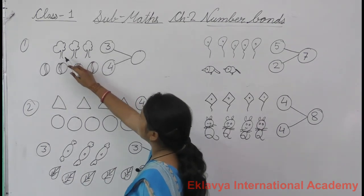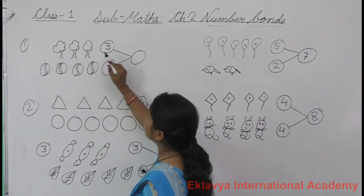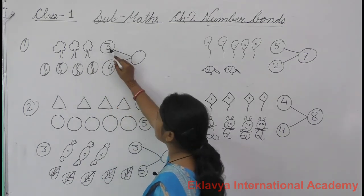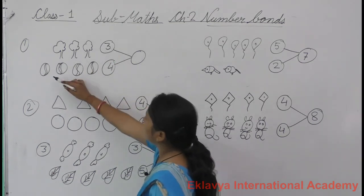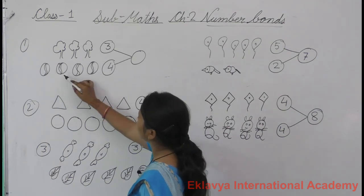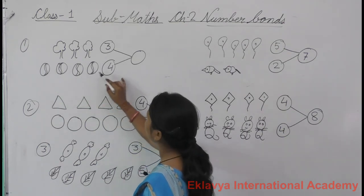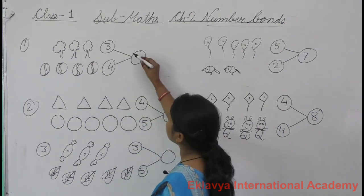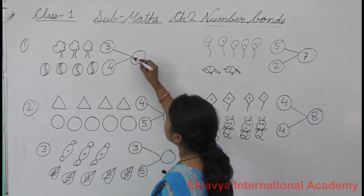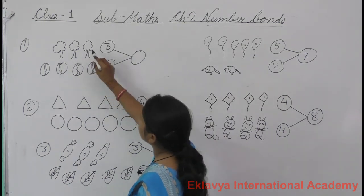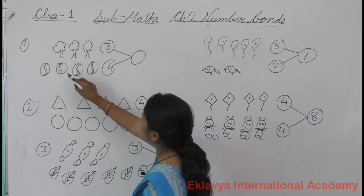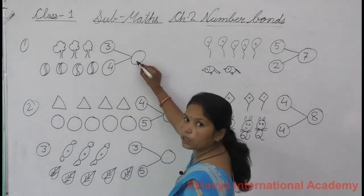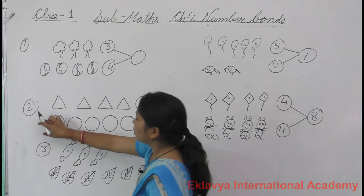This first example is trees. How many trees? Three — one, two, three. And how many balls? One, two, three, four. Four balls. Three trees plus four balls. Count: one, two, three, four, five, six, seven. Put the number seven.